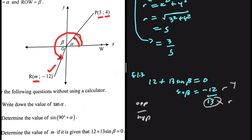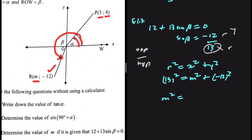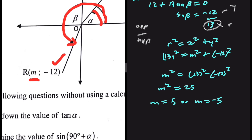We're looking for m, so we set up the equation: r squared equals x squared plus y squared. That gives 13 squared equals m squared plus minus 12 squared. So m squared equals 13 squared minus 12 squared, which equals 25. Therefore m equals 5 or m equals minus 5. Since x is negative in the third quadrant, m cannot equal 5 — m equals minus 5.